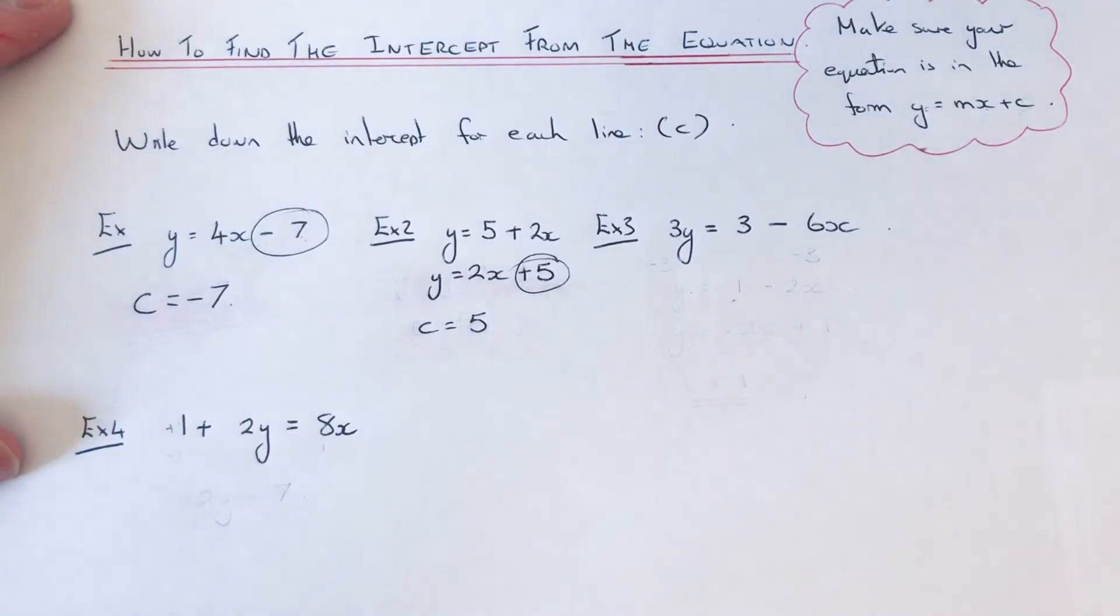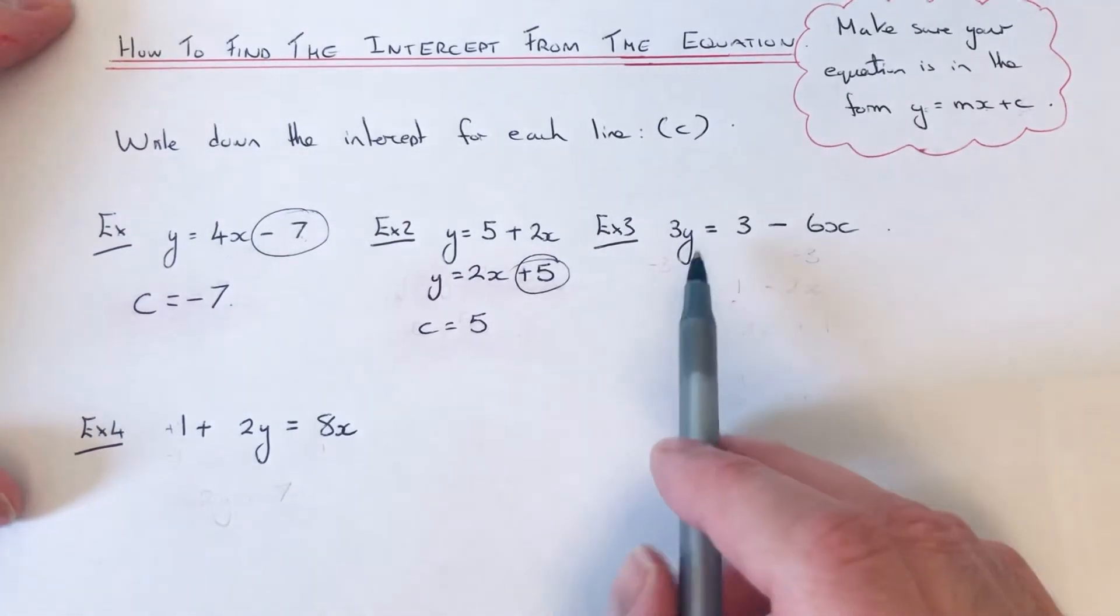Let's have a look at the third example. This time we have 3y equals 3 minus 6x. So this time 3y, y is not the subject.